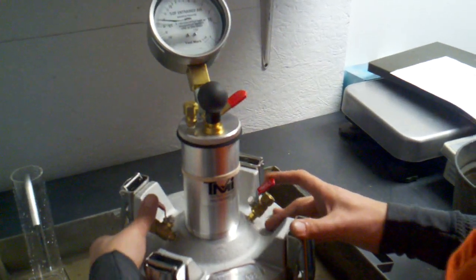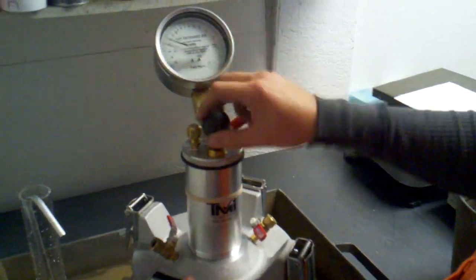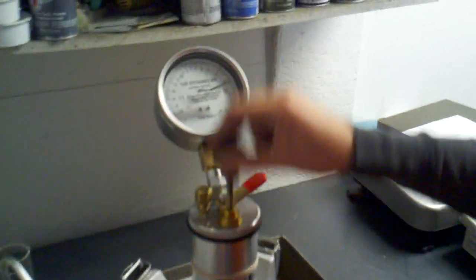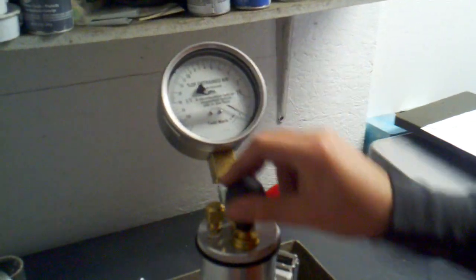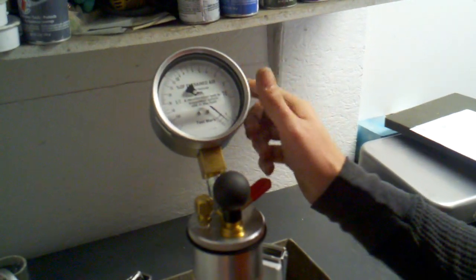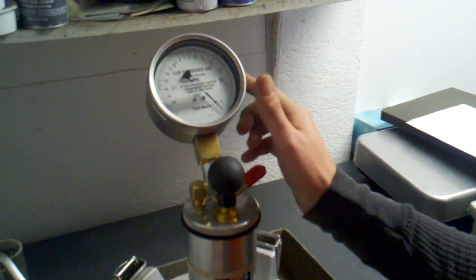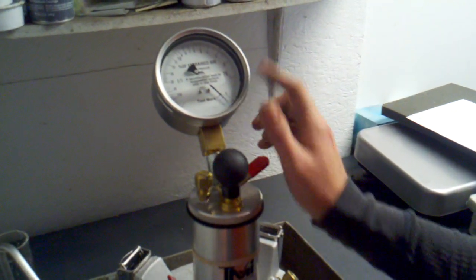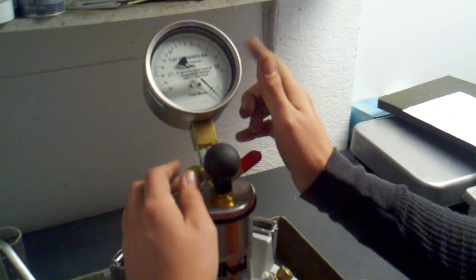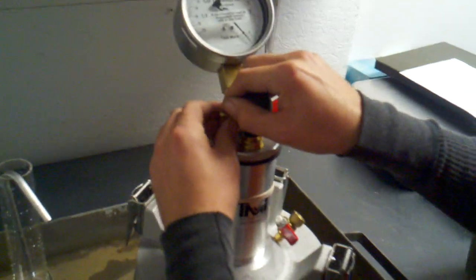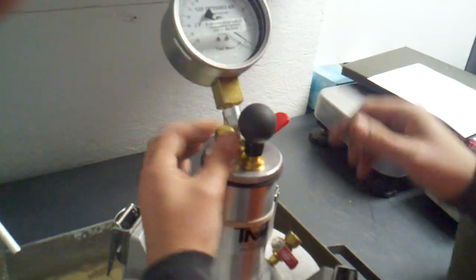Now at this point, we'll close both petcocks and pump the dial up until it reads 3% again. Again, tapping it to allow it to come to a rest at the 3. If you go over a little bit, you can always adjust it by the bleeder stem there.